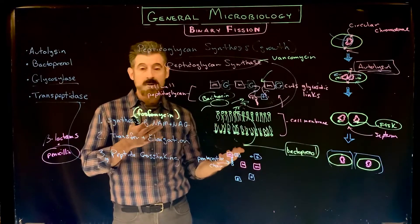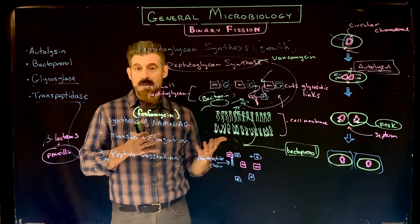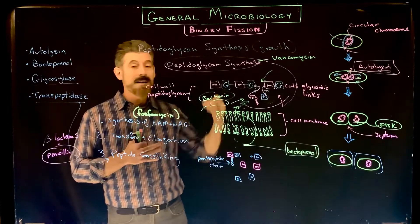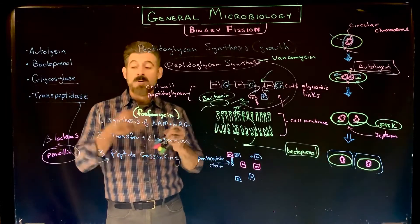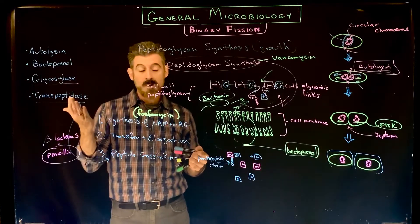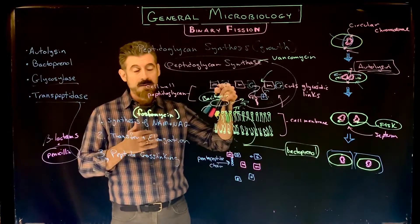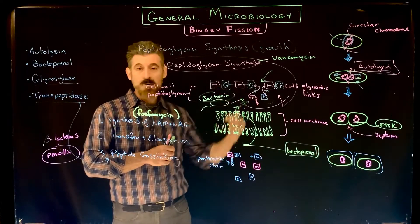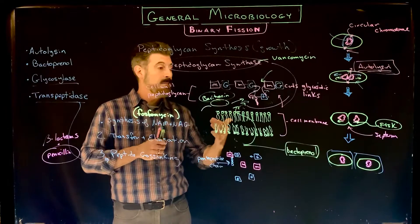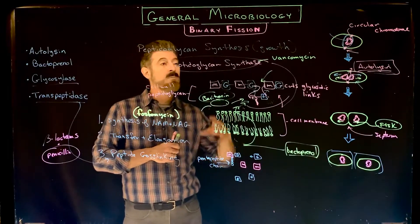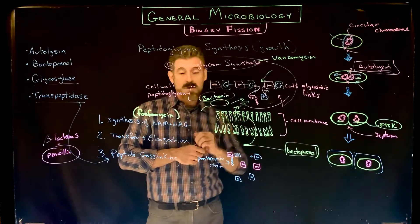Whenever there's a process that has multiple steps, there are also multiple enzymes working at each step. And for inhibitors like antibiotics, there can be multiple targets. It can be regulated by the cell or inhibited by outside forces at multiple different steps. Any one of them would cause a disruption of the formation of the cell wall.